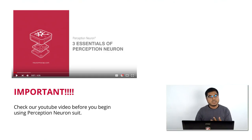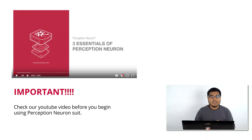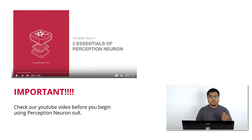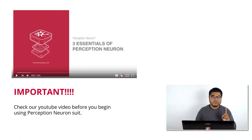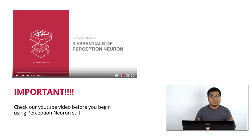Number one: perform a posture calibration in a suitable area so your whole suit can work at an optimal level and minimize the finger situation. Number two: check the status of the Neuron sensors — they might be magnetized. Inside of Axis Neuron, on the top left, go to Tools and do Neuron Calibration. So two things: performing posture calibration in a suitable area is very important, and checking and calibrating the Neuron magnetization as well.